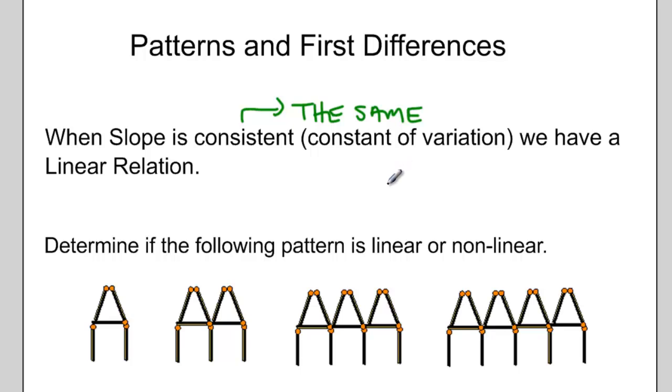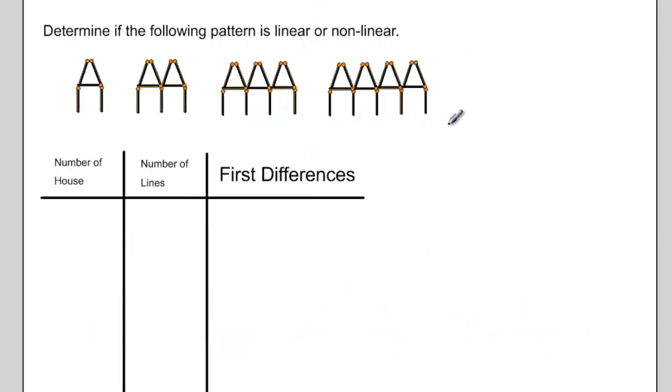Specifically, we're looking at the number of houses, so one, two, three, or four houses, and the number of lines that it takes to draw each house. So here for one house we need five lines, two houses need nine lines, three houses need nine lines plus another four, so thirteen, and so on.